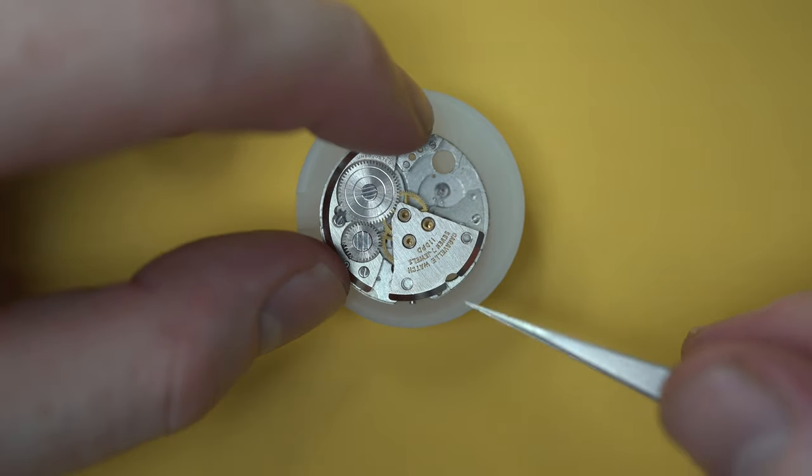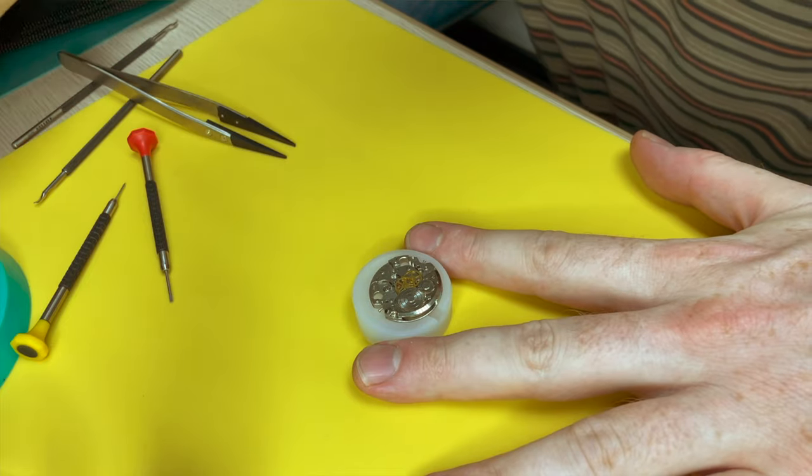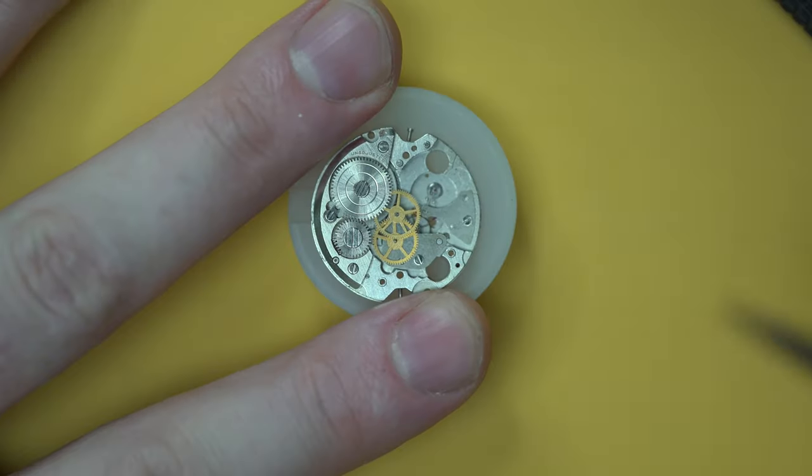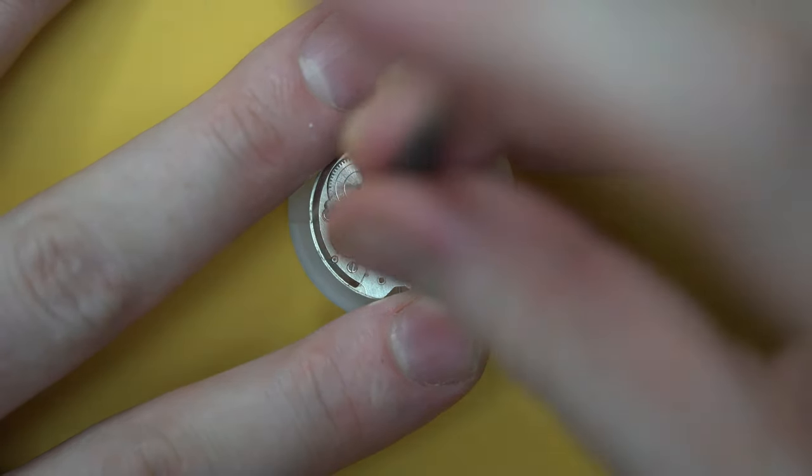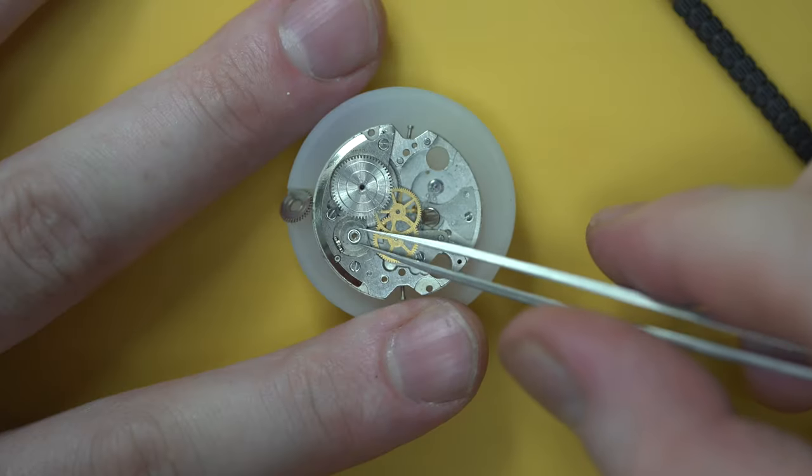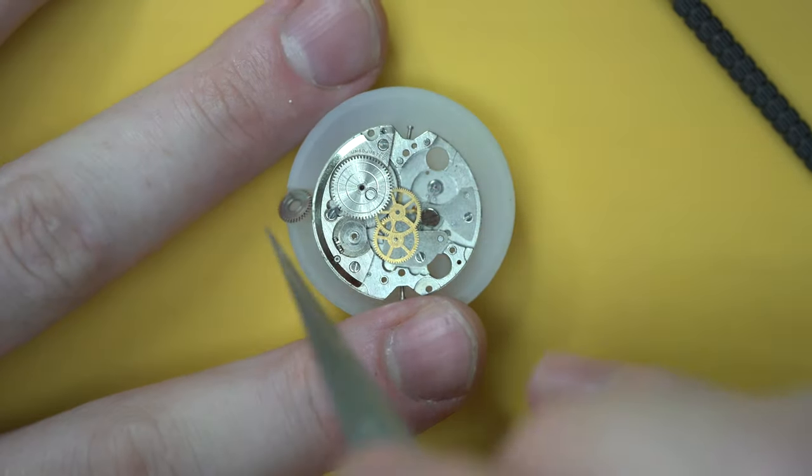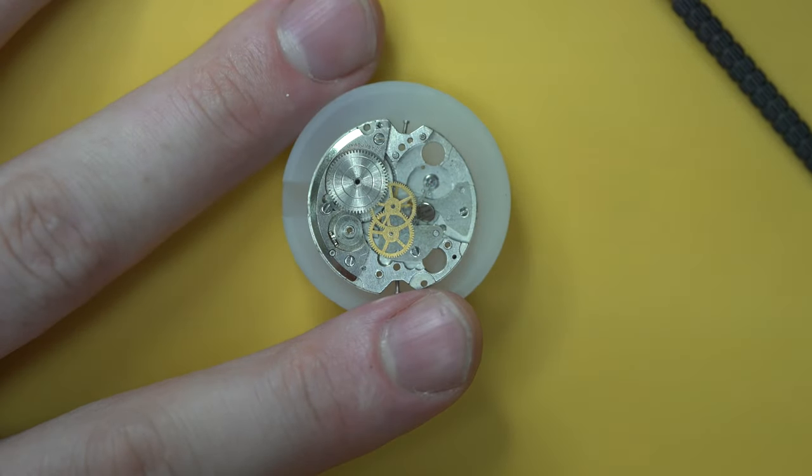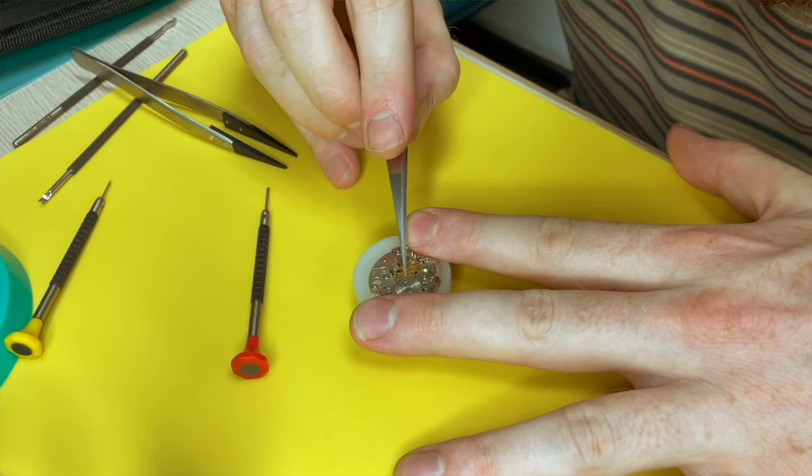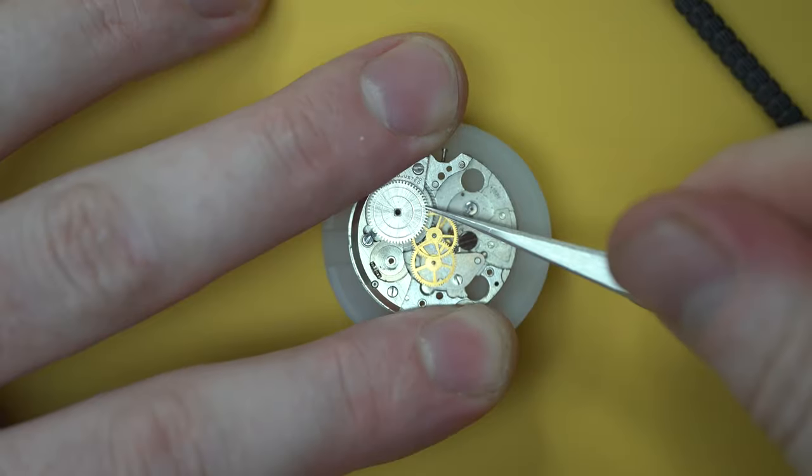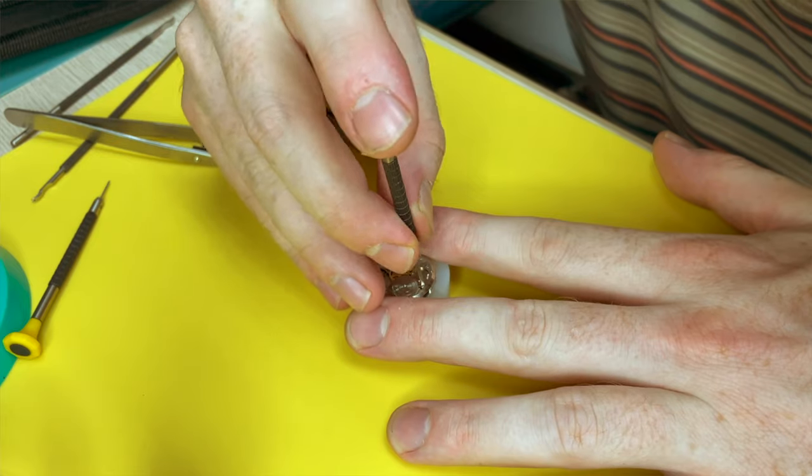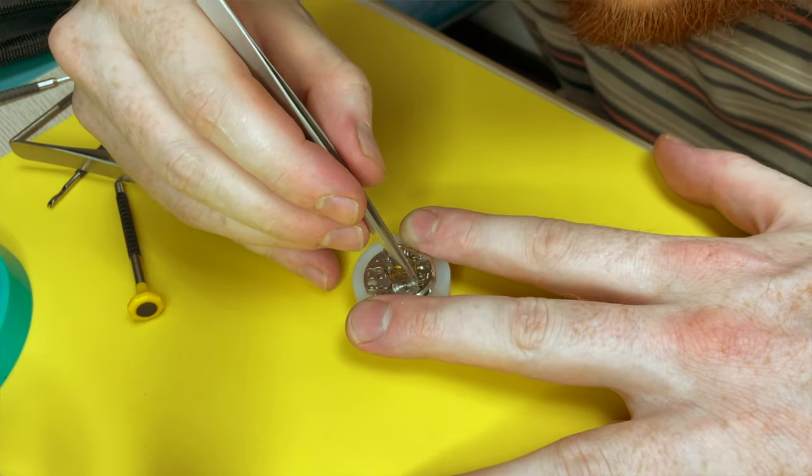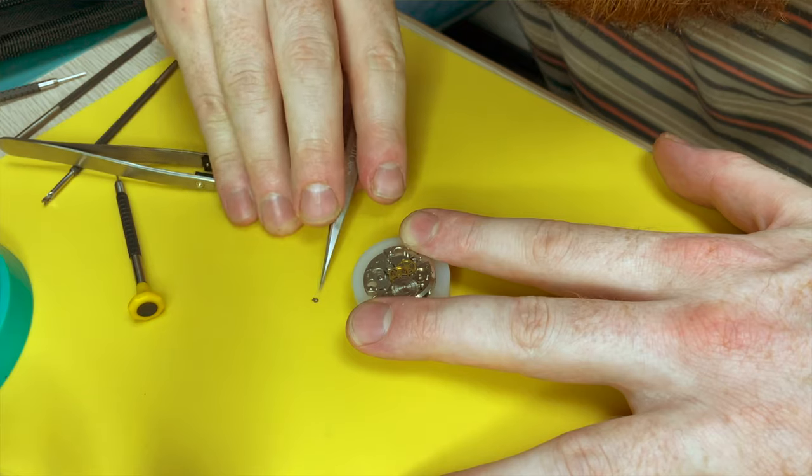This part I'm removing is actually the train wheel bridge. So what that does, that secures the train wheels in position. After that, we'll move on to this part of the keyless works. So within a watch, although everything does work together in order to make everything run smoothly, there are sort of siloed parts and this part I'm removing at the minute is part of the keyless works. The keyless works is everything that's connected to the winding stem. When you pull the crown out to set the time or you rotate the crown to wind the power, everything that is connected to that winding stem is part of the keyless works.